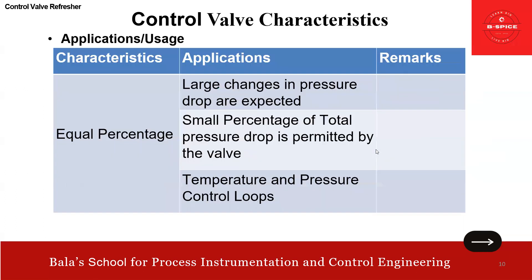For equal percentage: it is used when large changes in pressure drop are expected. Also, with this characteristic, only a small percentage of pressure drop is taken by the valve. It is also used for temperature and pressure control loops. To summarize: linear is for level and flow loops; equal percentage is for temperature and pressure control loops.